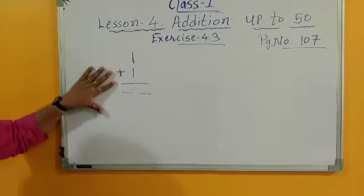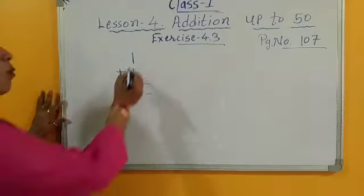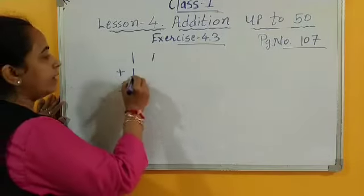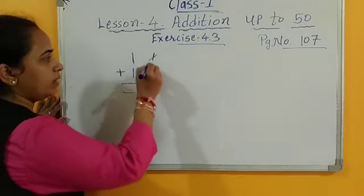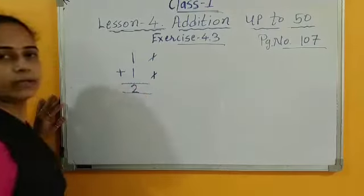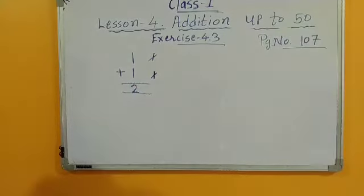So first is 1 plus 1, so what is this? 1 line here and 1 line here, so how many? 1, 2, so 2 lines, so 2 numbers. Is it clear?